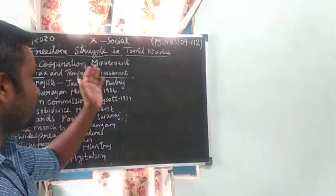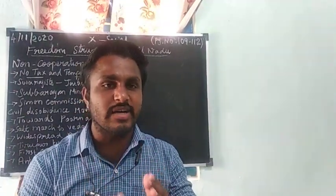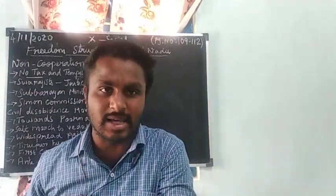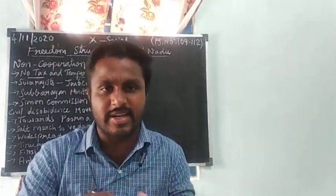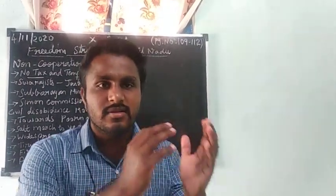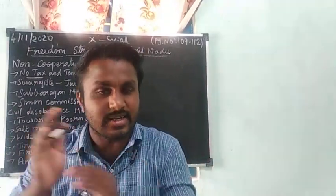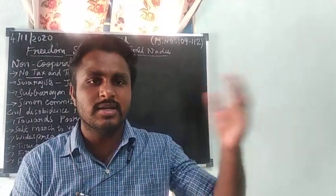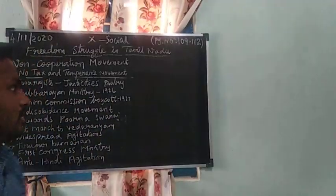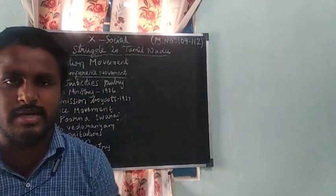Welcome everyone. This lesson is about the freedom struggle in Tamil Nadu. We have already discussed the Gandhian phase in India in the previous lesson. What we learned in the Gandhian phase in India is the same thing given in Tamil Nadu. For example, the non-cooperation movement, no tax campaign, and civil disobedience — all happened in the Gandhian phase in India and the same spread in Tamil Nadu.